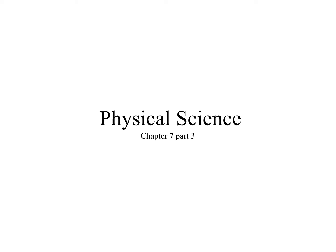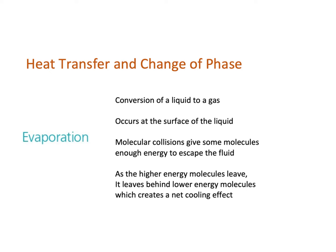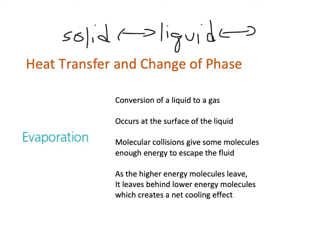The next thing we want to look at is how heat transfer relates to what we call a phase change. In grade school, you probably learned that there are three main phases of matter — we're just going to worry about the main three. Those are solid, liquid, and gas. If you have a solid and you heat it up enough, it's going to melt and turn into a liquid. That's called a phase change — the melting phase change.